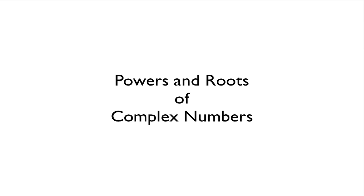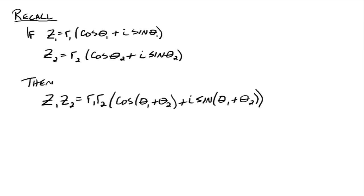This video is on powers and roots of complex numbers. Before we get started, I want to recall from the previous video: if we have two complex numbers in trigonometric or polar form, then if we multiply those two complex numbers together, you get R1·R2 times the cosine of the sum of the two angles plus i sine of the sum of the two angles.